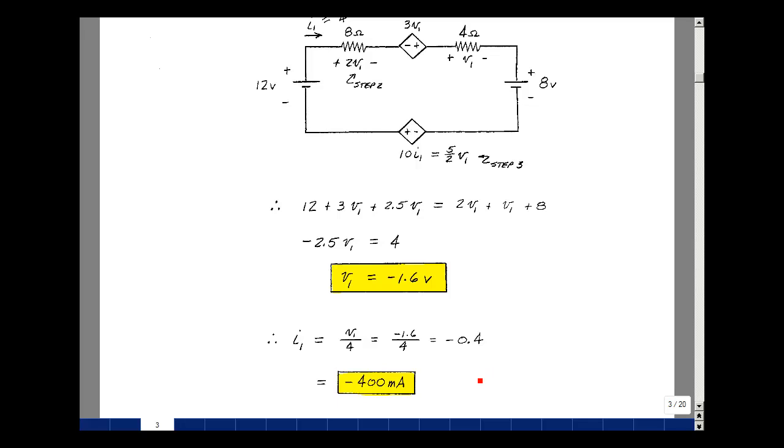And of course, I'm going to put all my answers in engineering notation with units, and move the decimal place over three places. So that would be a minus 400 milliamps.